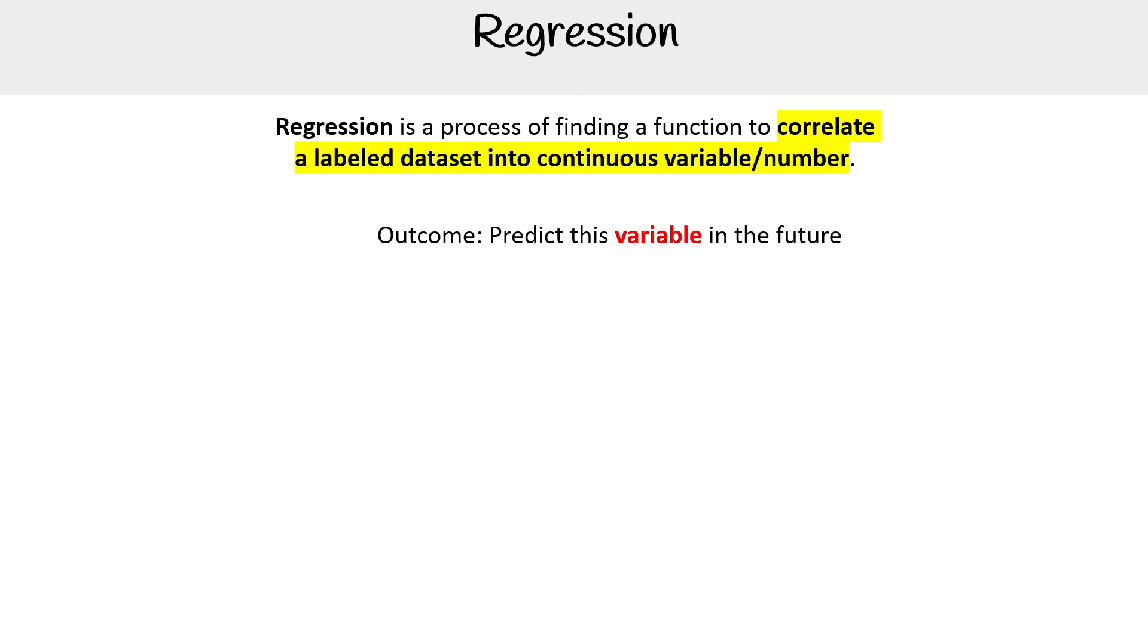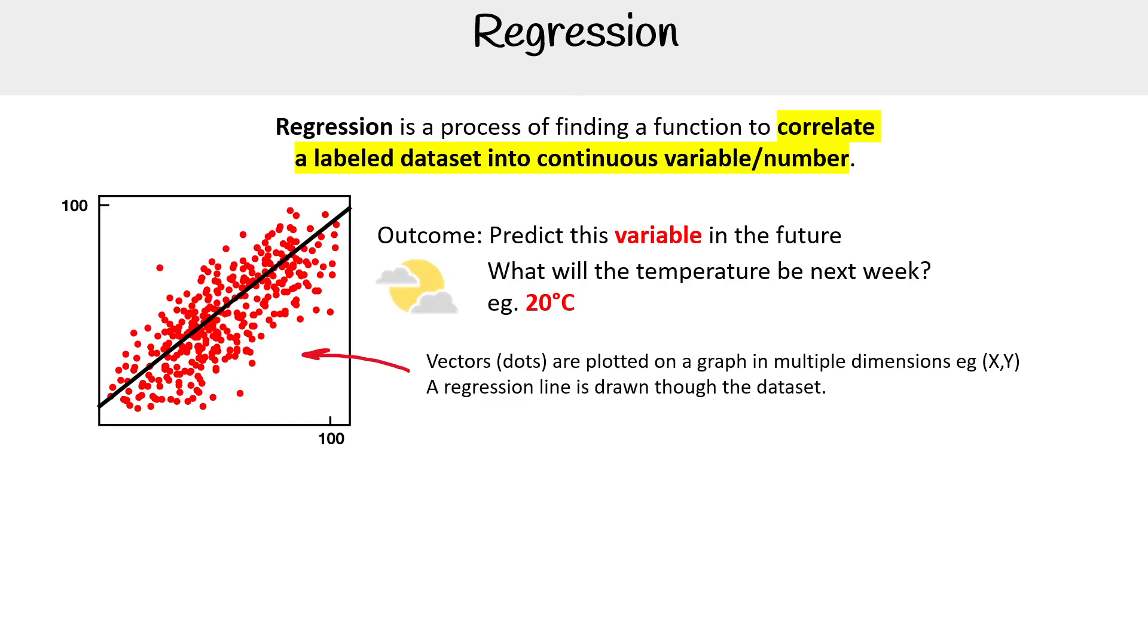So imagine we need to predict a variable in the future, such as the weather, what it's going to be next week. The idea is that you're going to plot your data onto a graph or vector space. Our dots are represented as vectors.